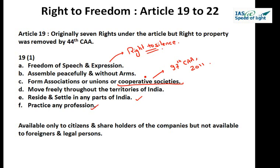The second ground is 'friendly relations with foreign states.' This was added by the First Constitutional Amendment Act, 1951. The objective was to prohibit unrestrained malicious propaganda against a friendly foreign state, which may jeopardize good relations between India and that state. No similar provision is present in any other constitution of the world. India has the Foreign Relations Act which provides punishment for libel by Indian citizens against foreign dignitaries.